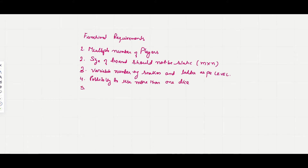We should have a possibility to use more than one dice. The next requirement is that we should be able to log the details while playing the game — the state of the game. It might be useful when someone wants to see how they played or review their game statistics. The computer should also randomly select a person who starts the game.